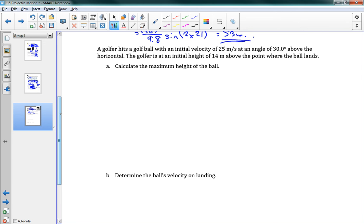The very last piece here is a problem about a golfer. It says a golfer hits a golf ball with an initial velocity of 25 meters per second at an angle of 30 degrees above the horizontal. The golfer is at an initial height of 14 meters above the point where the ball lands. So if I draw this problem here, our golfer is up here. Here's our golfer. And the golf ball goes up like this and back down. And it says that the ball lands 14 meters below where it starts. I'm going to leave this problem for you to solve. I want you to remember, can you use the range equation? Can you use, does it have the zero of delta dy? So think about that. See what you can use.